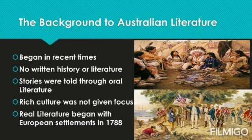Thus the real literature of Australia began with European settlement in the year 1788, and this was the real beginning of modern Australian literature. This is where literature began, and this is where we will begin looking at the history of Australian literature.